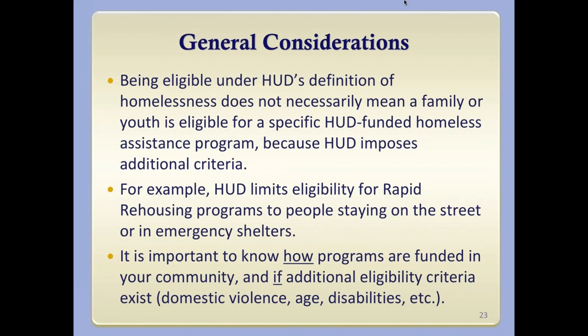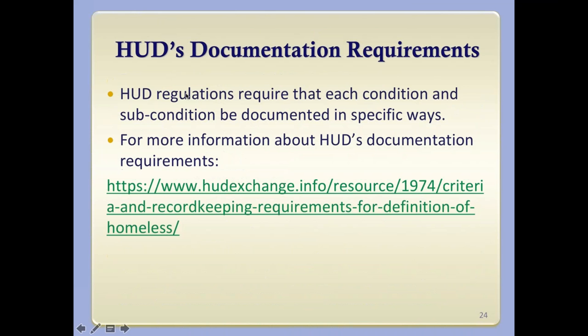The takeaway is that it's really important to know how programs are funded in your community and if there are additional eligibility criteria. This is going to look very different in different communities. We wanted to include this information carefully because depending on your community, this new piece of ESSA may not amount to much — but in other communities it may provide a new opportunity. HUD's regulations require that each of the conditions and sub-conditions in the definition be documented in specific ways, with a link provided so you know how to document that you meet the definition.